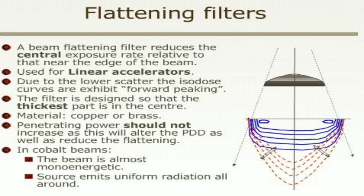A beam flattening filter reduces the central exposure rate relative to that near the edge of the beam, and is used for linear accelerators. Due to the lower scatter, the isodose curves curl or exhibit forward peaking. The filter is designed with the thickest part at the center, and is made of metal such as copper or brass. Penetrating power should not increase, as this will alter the percentage depth dose and reduce the flattening. In cobalt beams, the beam is almost monoenergetic and the source emits uniform radiation all around.